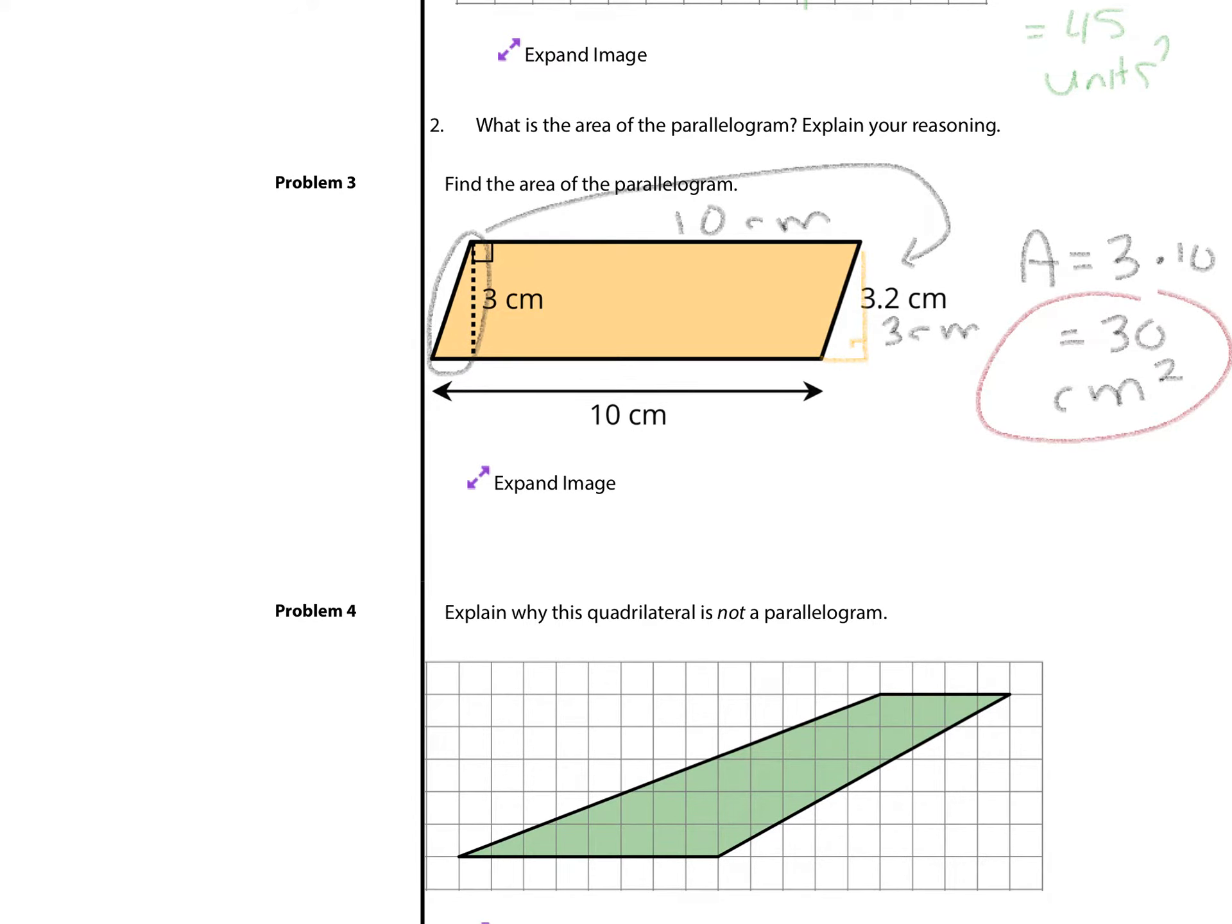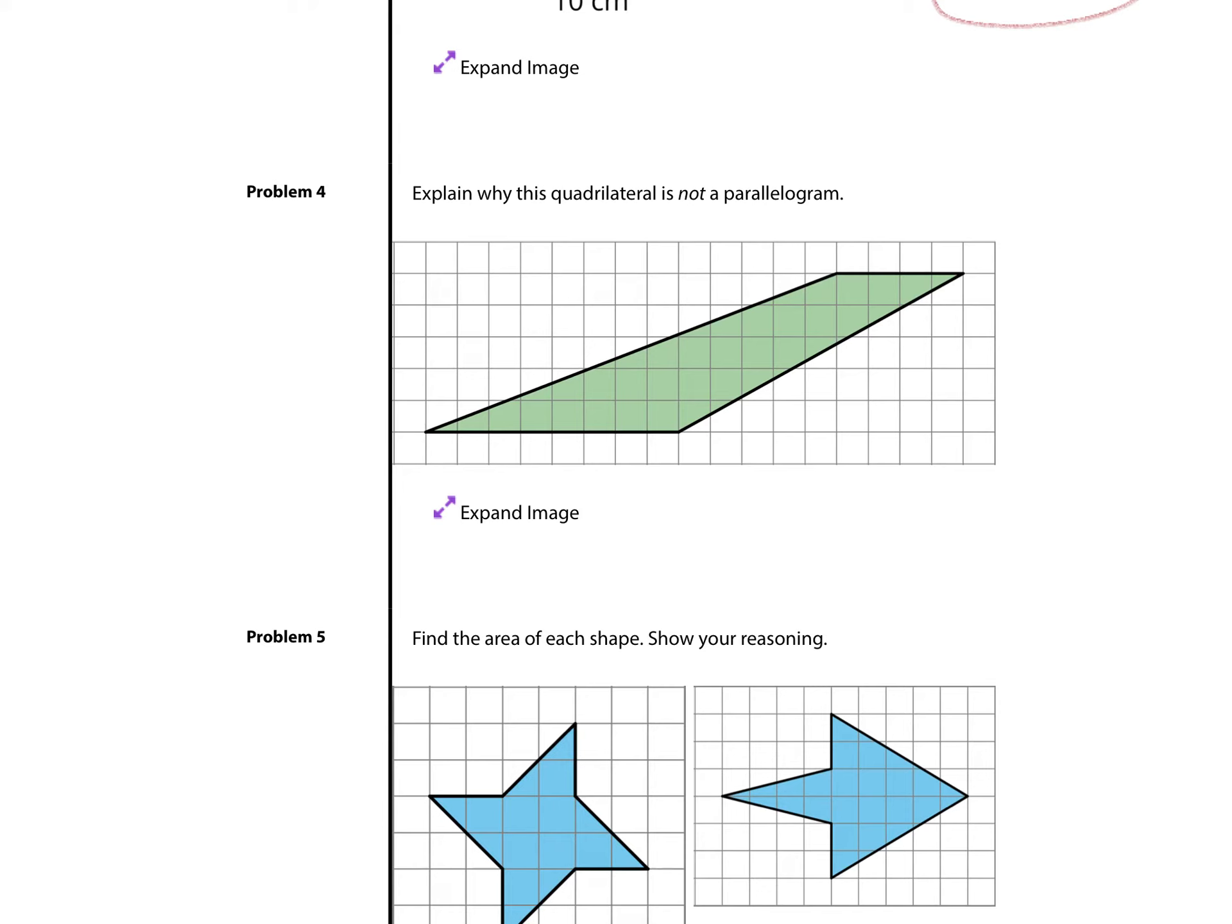Then, question four. Explain why this quadrilateral is not a parallelogram. Well, I'm going to lock in on this side and this side and say that the opposite sides are not all parallel. And for that matter, they're not the same length either. Alright.